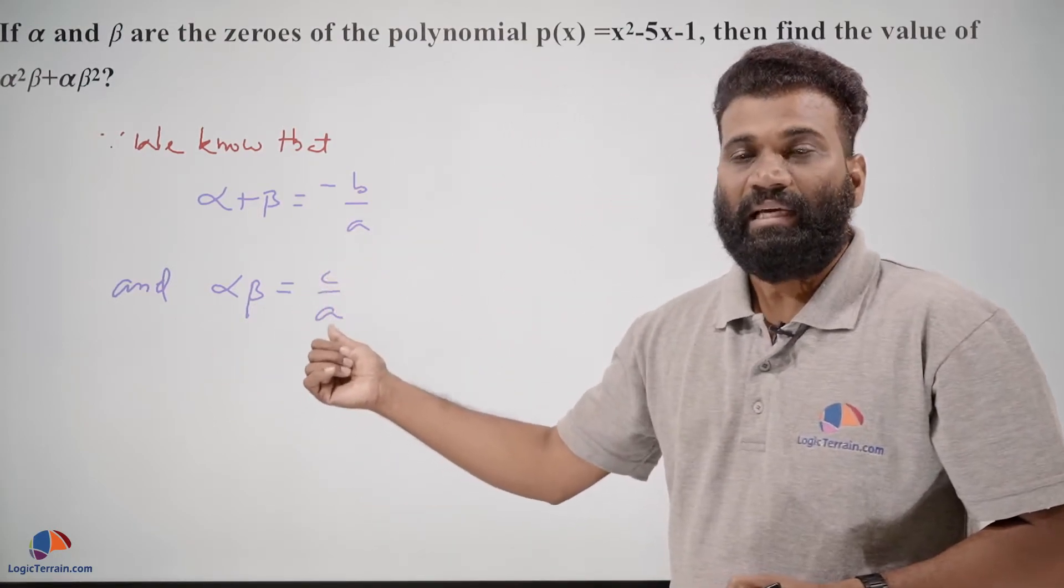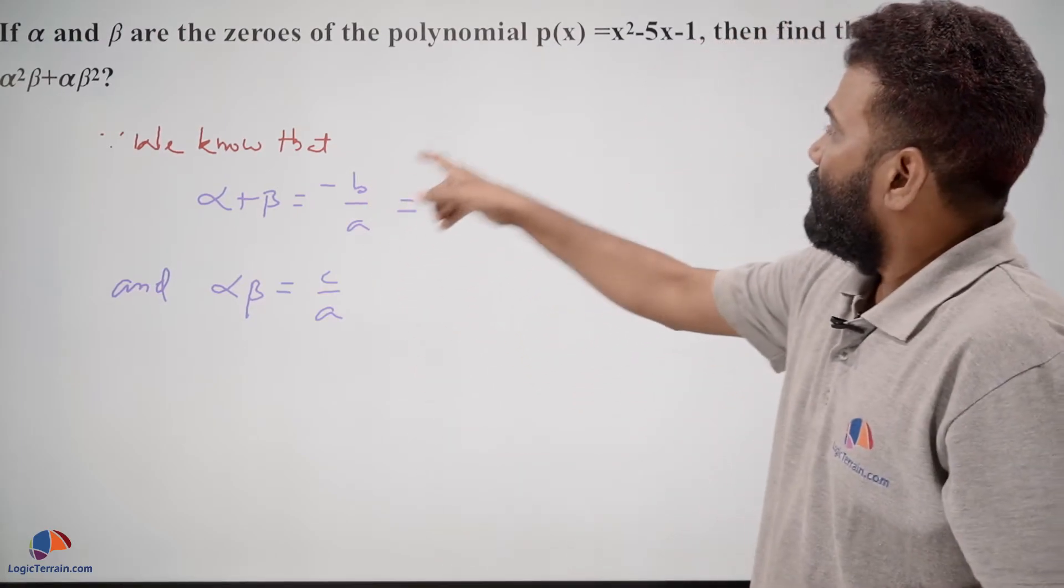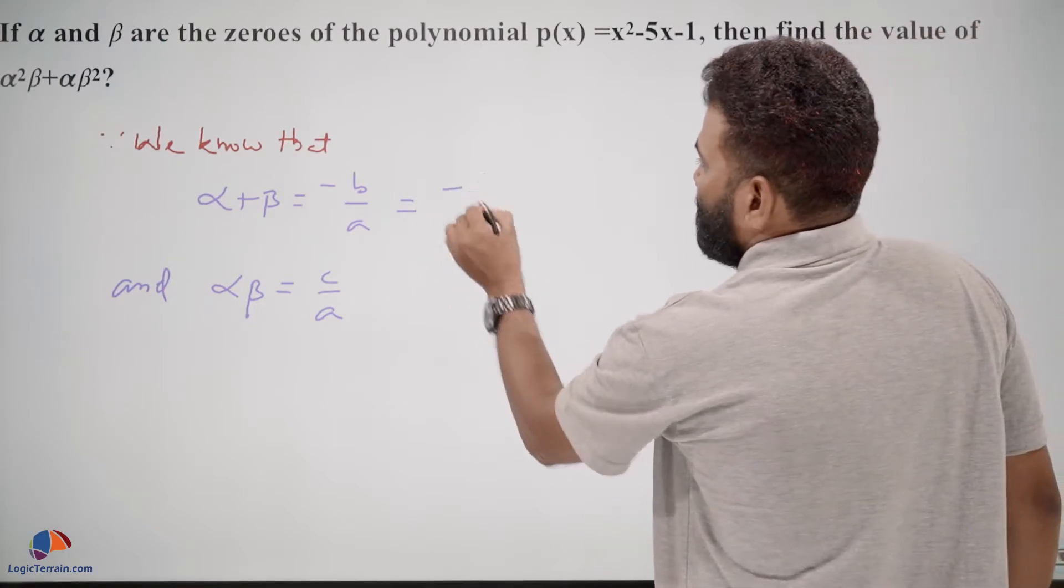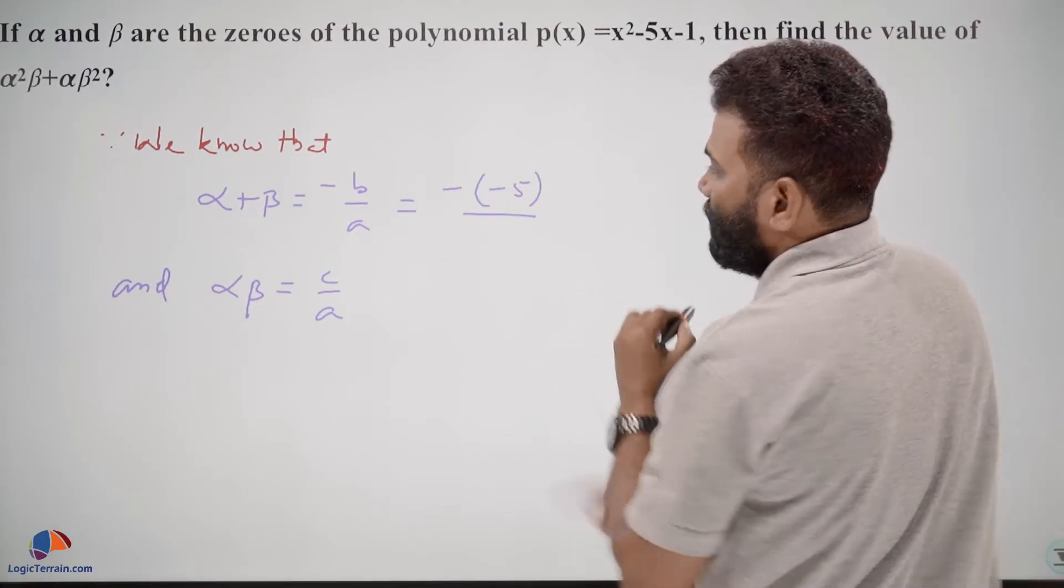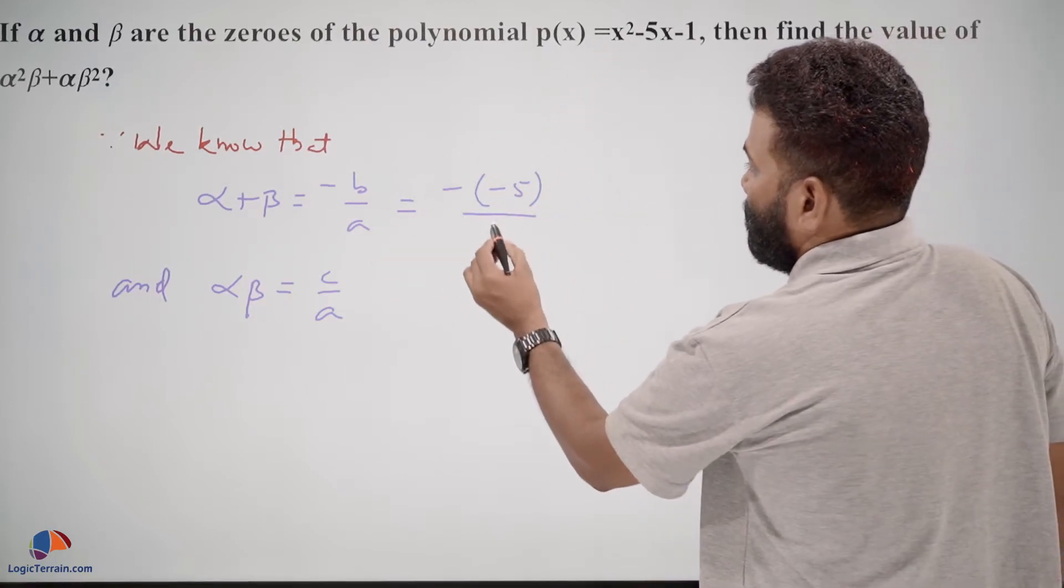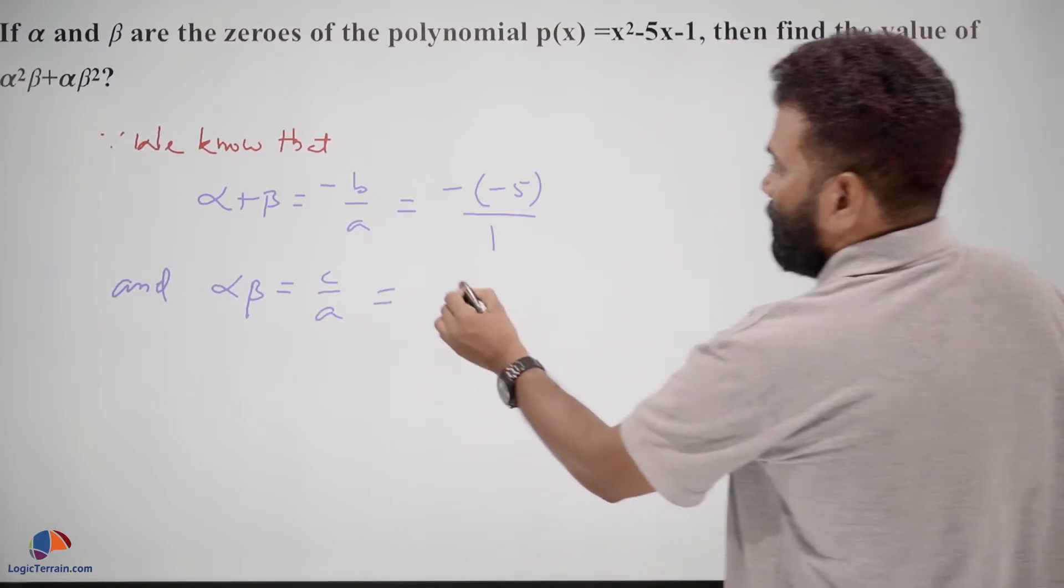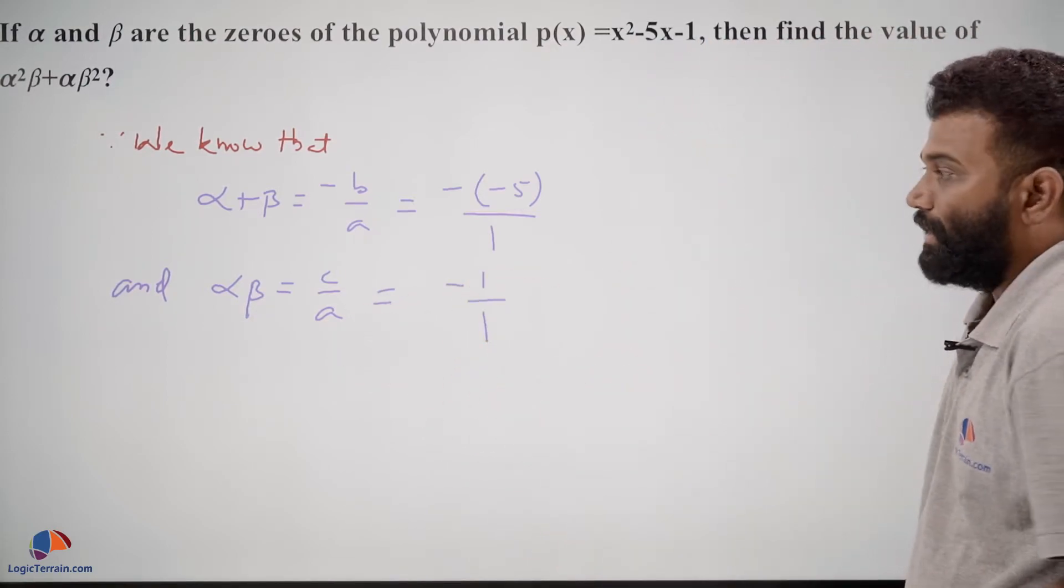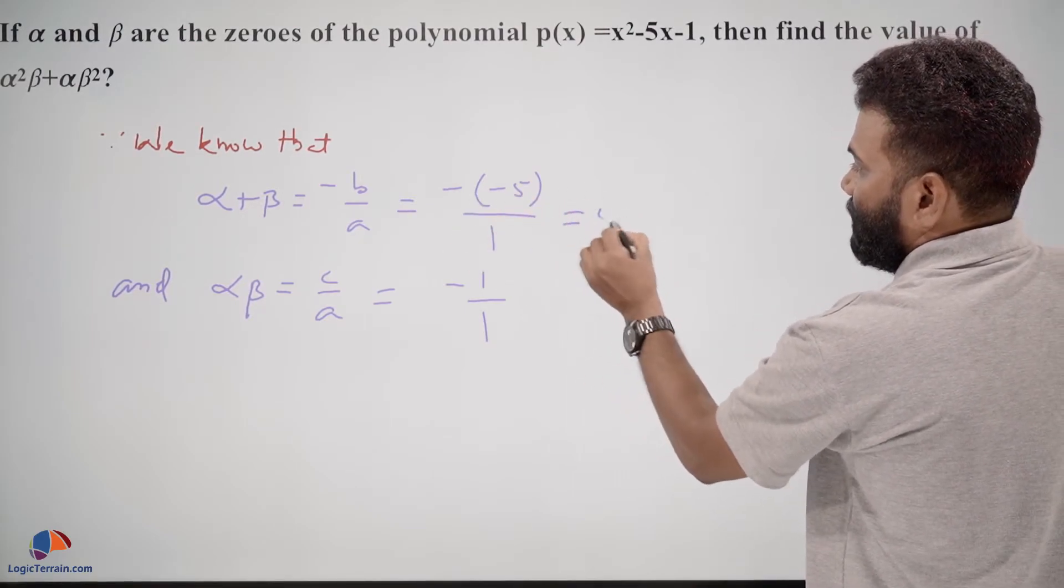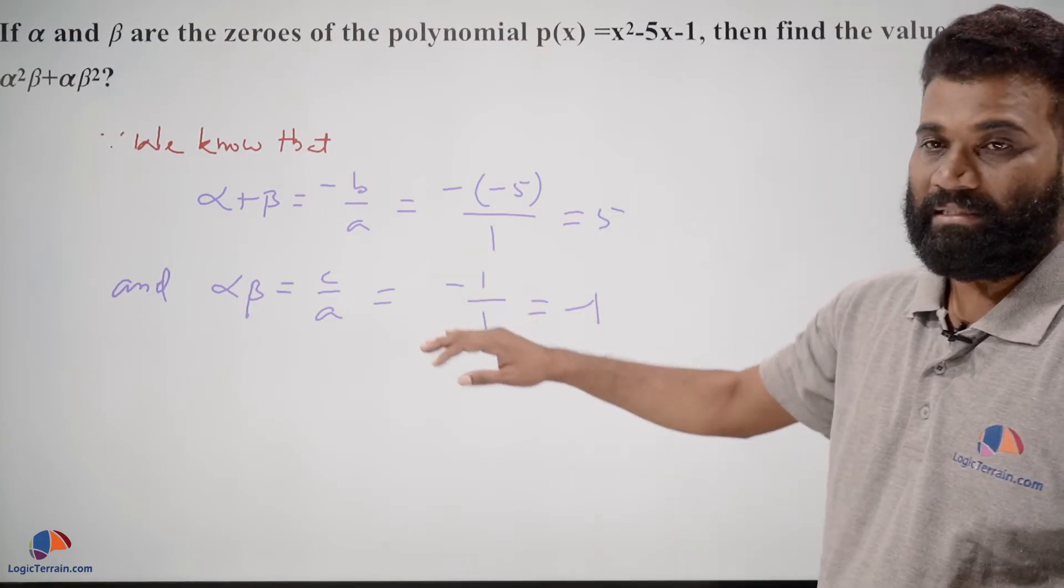So here, the x coefficient is negative 5, so α + β = -(-5)/1 = 5. And the constant is -1, so αβ = -1/1 = -1. We got this.